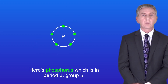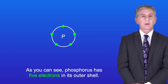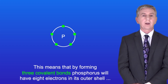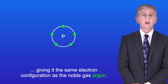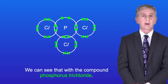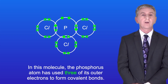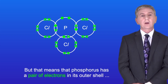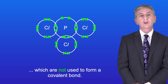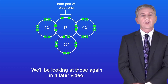Here's phosphorus, which is in period three, group five. Phosphorus has five electrons in its outer shell. By forming three covalent bonds, phosphorus will have eight electrons in its outer shell, giving it the same electron configuration as the noble gas argon — as we can see with phosphorus trichloride. The phosphorus atom has used three of its outer electrons to form covalent bonds, leaving a pair of electrons in its outer shell not used in bonding. Scientists call this a lone pair of electrons.